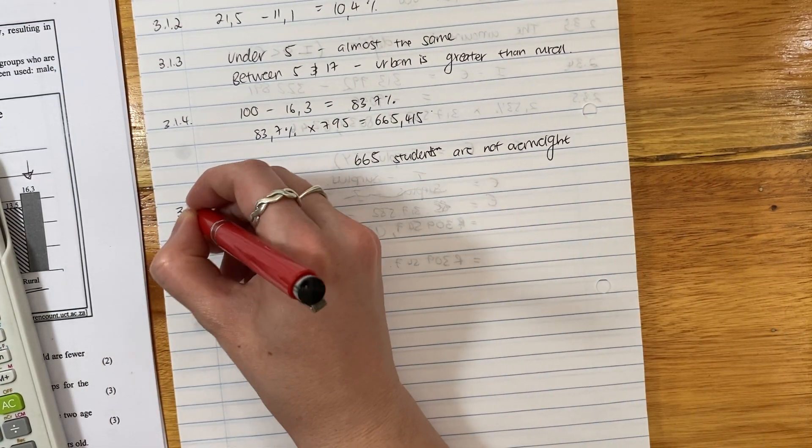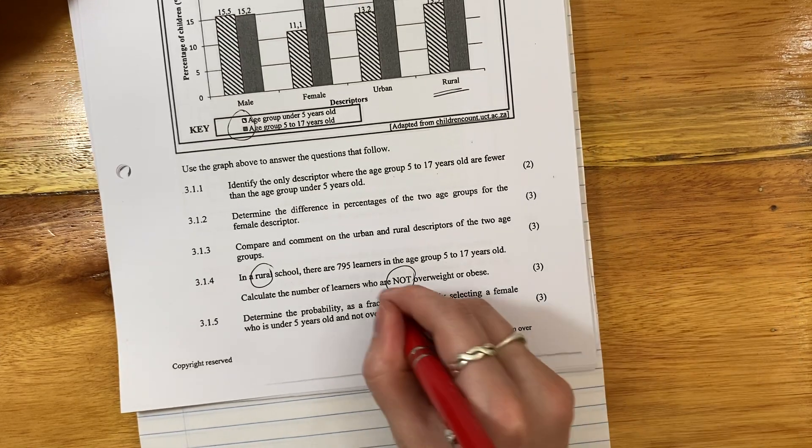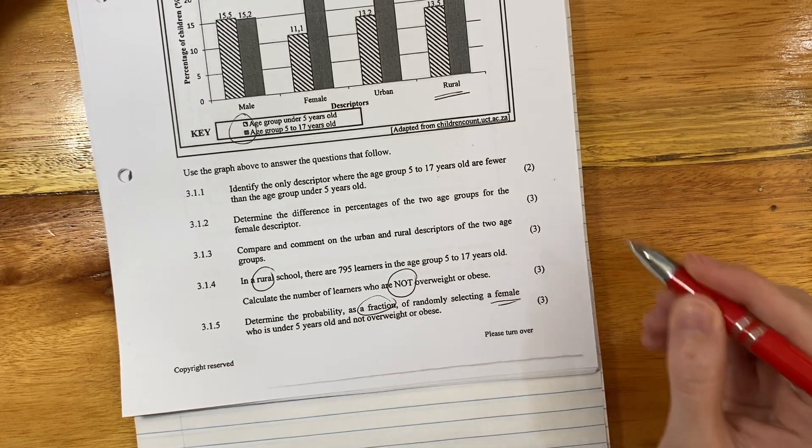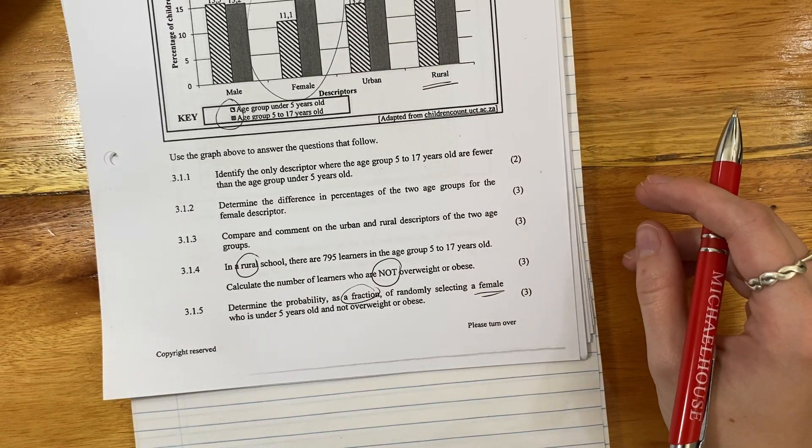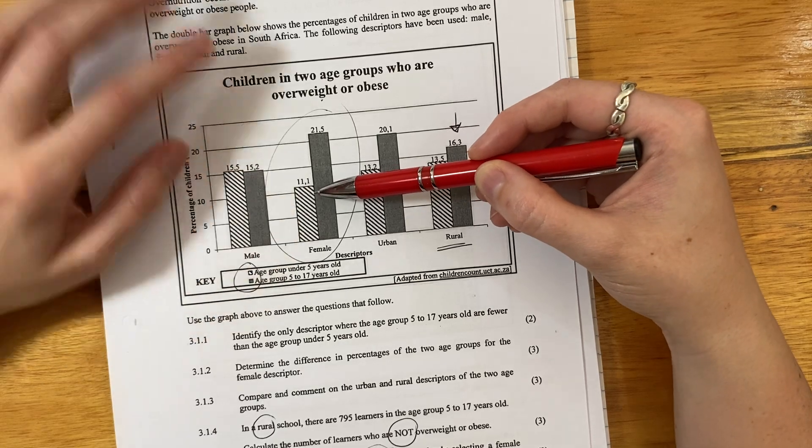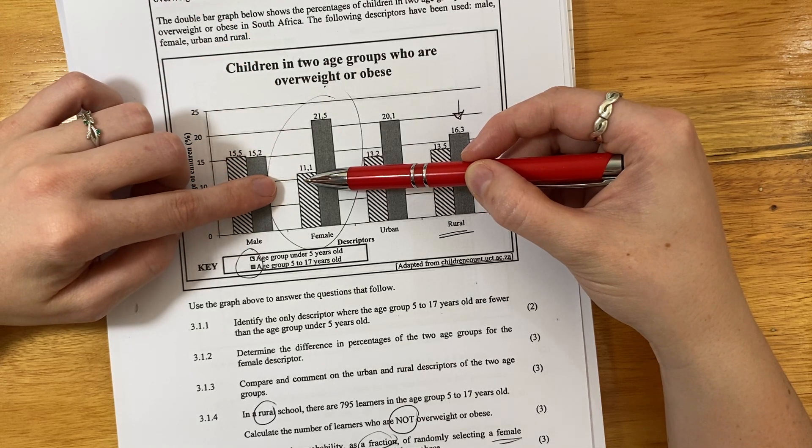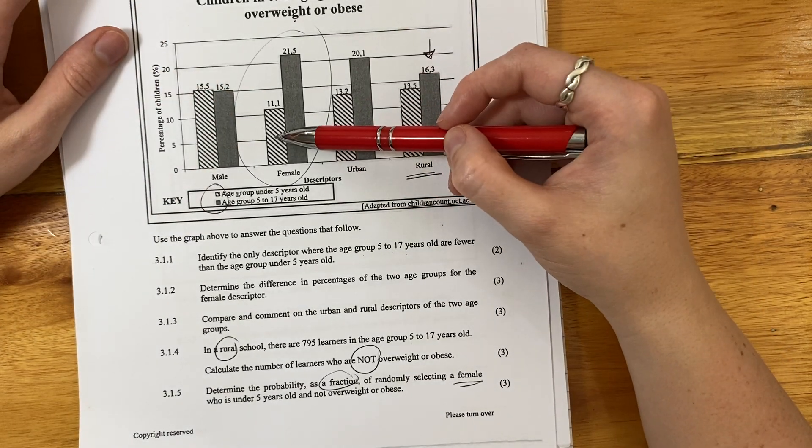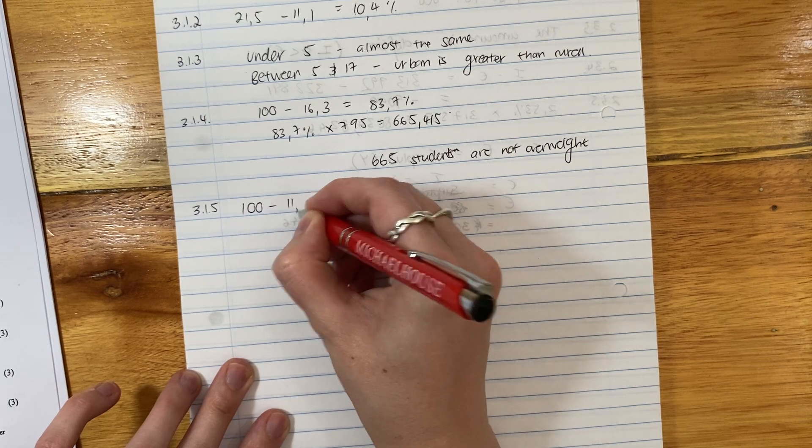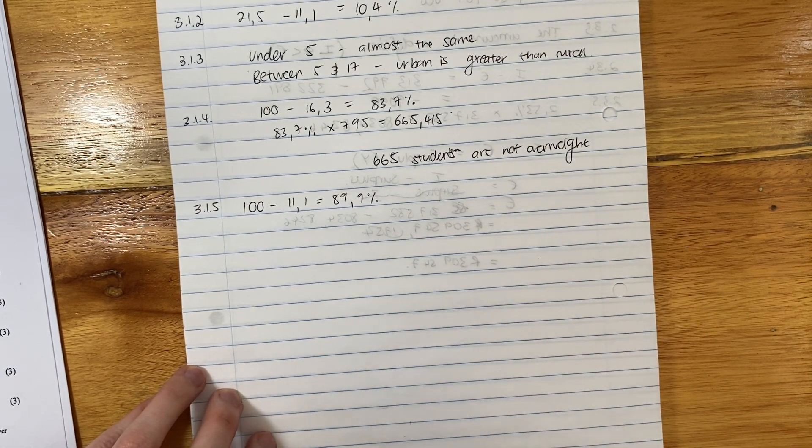It says determine the probability as a fraction, so that's important, you can't just write it any way you want, you have to write it as a fraction, of randomly selecting a female, so we're looking at the female, so where's the female? They're over here, that's who you'll be interested in, who is under 5 years old and not overweight or obese. So we have to say here, well the probability that we get a female that is overweight or obese is 11.1%. So the probability of getting a female that is not overweight or obese is going to be 100% minus 11.1%. So we're going to say, it's very similar to reasoning to what we did before. 100% minus 11.1% gives me 88.9%.